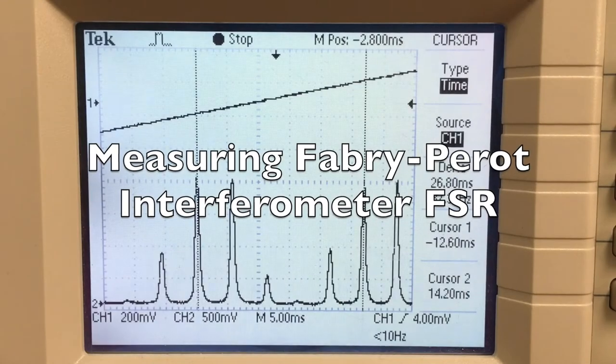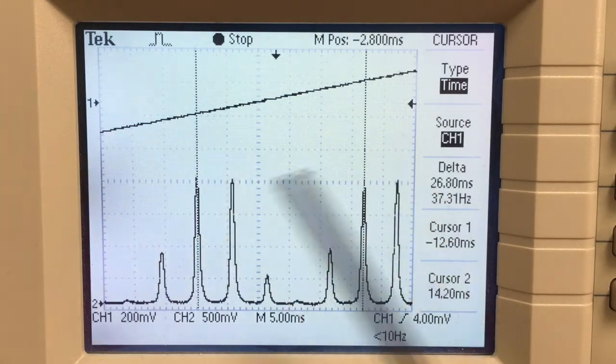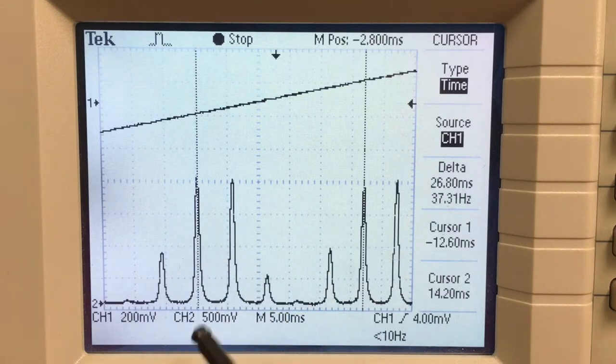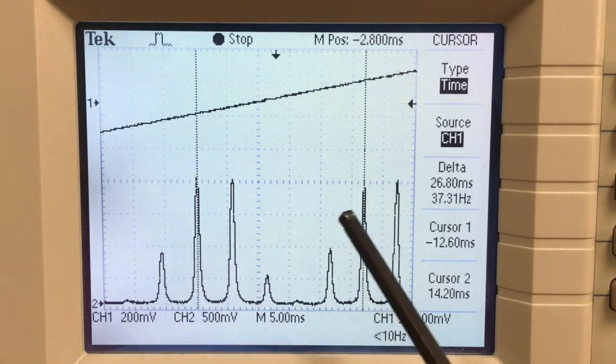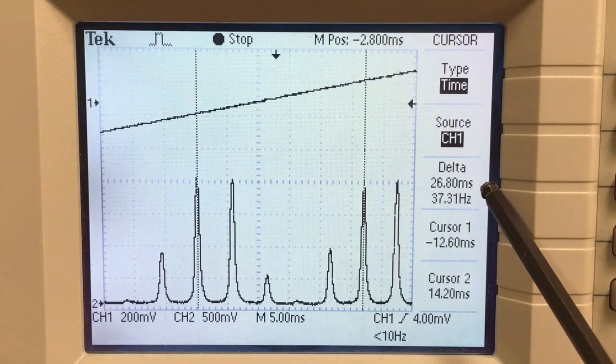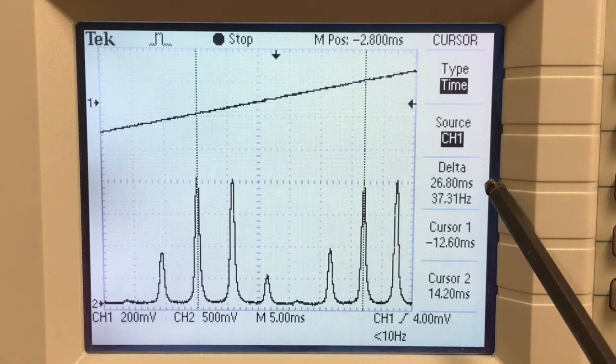So now I've zoomed in on that trace and I've set two cursors on the same peak, just one free spectral range apart. Cursor 1, cursor 2, and the important number is here, this delta. The difference between cursor 1 and cursor 2 is 26.8 milliseconds.